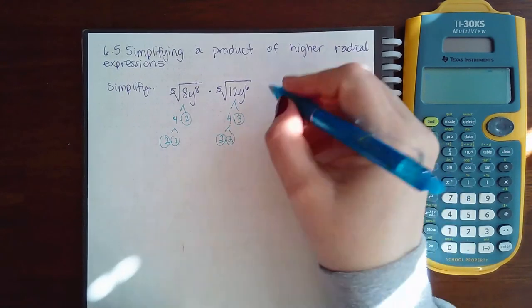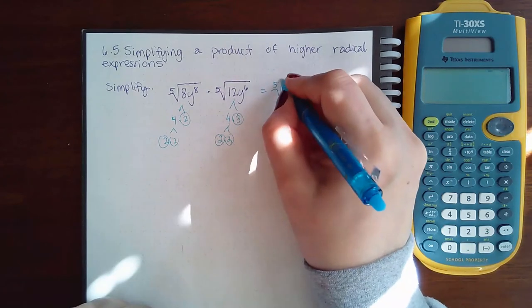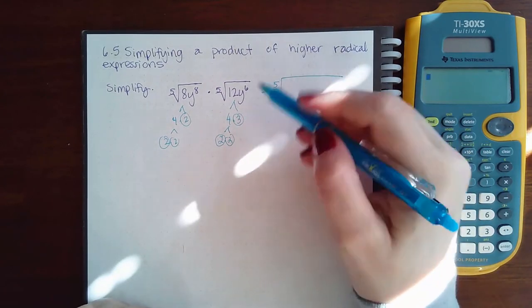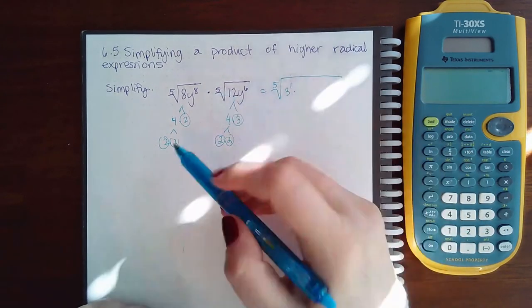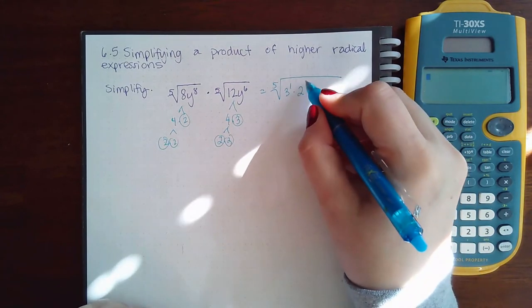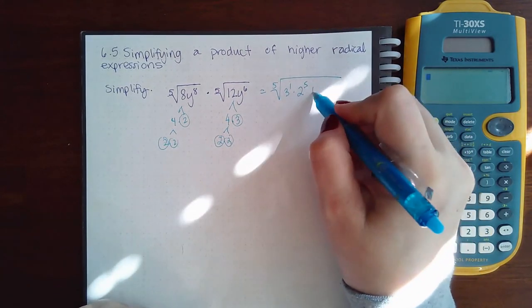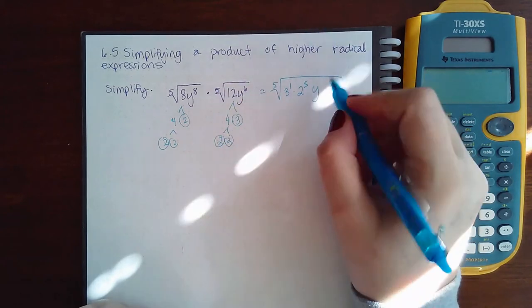So there are all my primes. If I write the number part, that would be a single 3 and then five 2s. For my variables, I have 8 and 6. If I multiply those together, I will get 14.